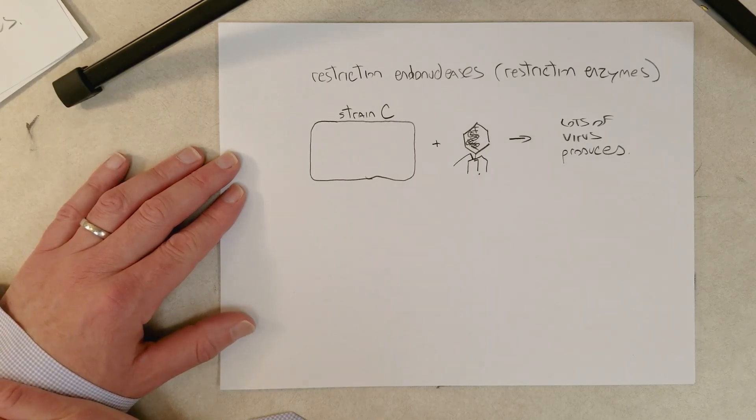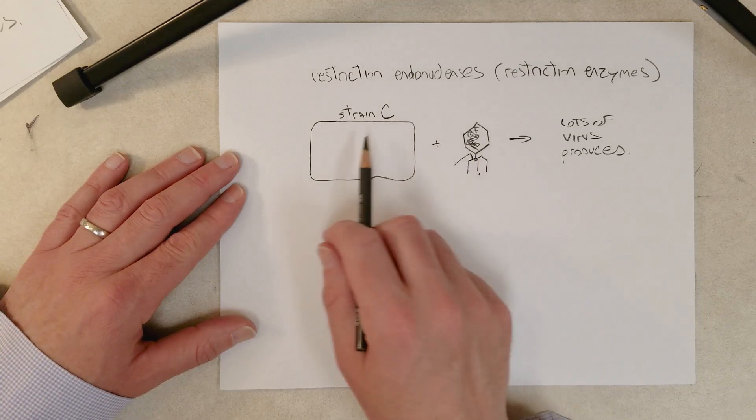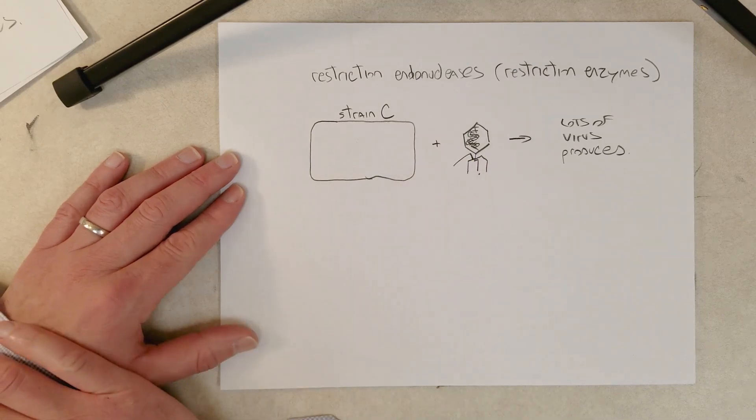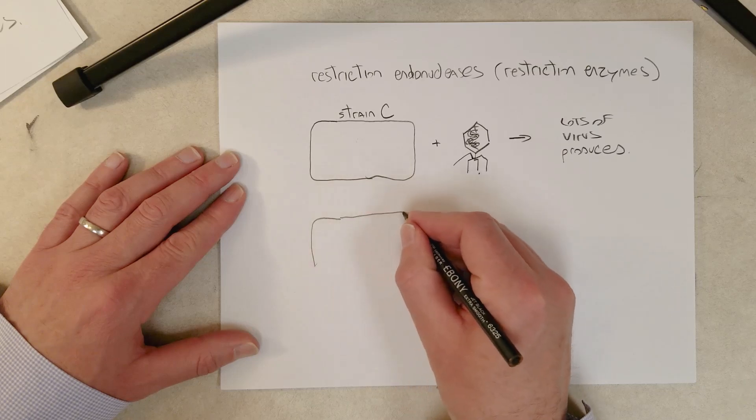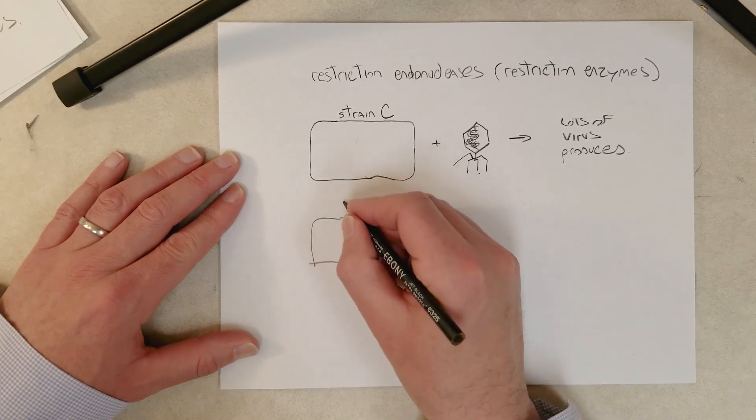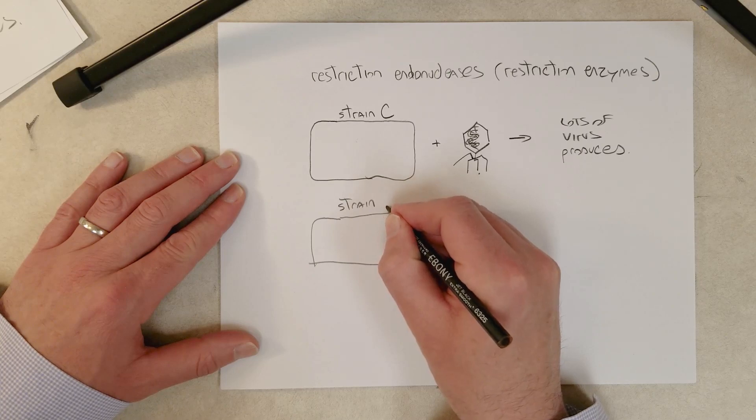So lots of the bacteriophage particles would be produced during an infection of strain C. However, when they did the same thing with a different strain of E. coli, so same species, different strain.